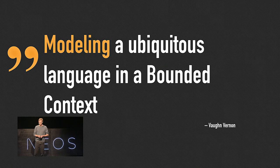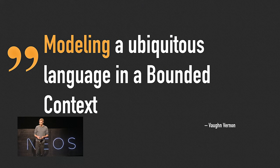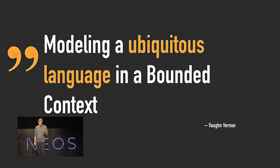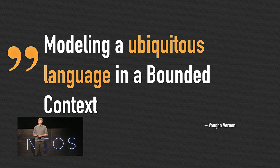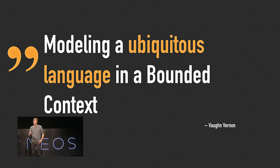The word 'modeling' highlights that it's a continuous process — we keep evolving the model as long as the project lives. Then it's all about that ubiquitous language, the language of the domain. We use the same terms when we communicate with each other and with domain experts, and we even use the same terms in the code to prevent misunderstandings.